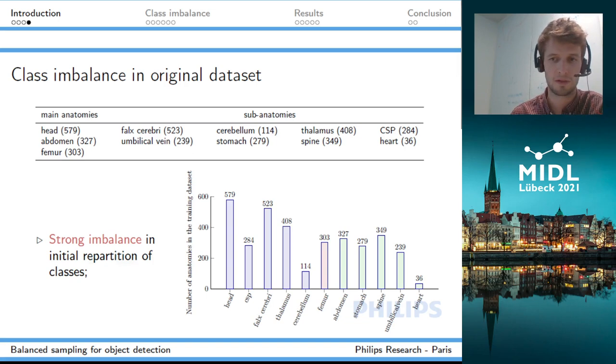This is where the fun begins. We have a strong imbalance in the initial distribution of classes in the dataset. For instance, we have almost 600 images of the head in the training dataset, but we have only 36 images with a heart. When we train a first neural network to perform this anatomy detection, we get very good results on the head and very poor results on the heart. The same is true for the cerebellum - we have only 114 images compared to the rest of the head images.